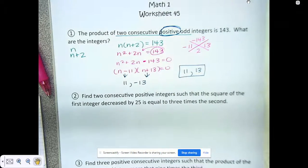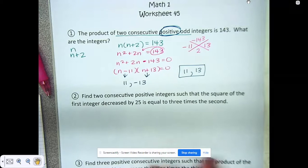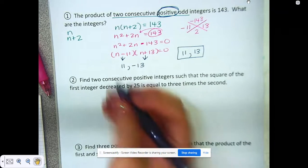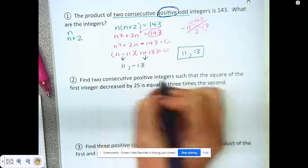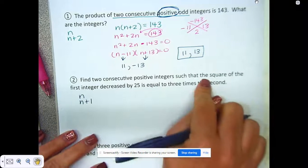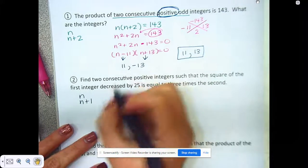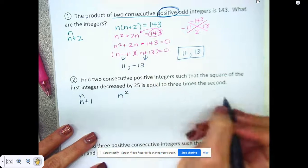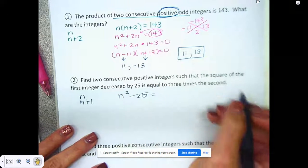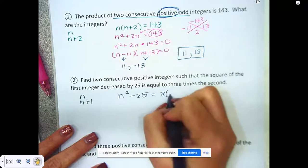This is the same process you would use on all of these. Number two says find two consecutive positive integers, so again it doesn't say even or odds, so we're just going to use n and n plus 1, such that the square of the first—so the first one was n and they want to square it—decreased by 25 is equal to three times the second.